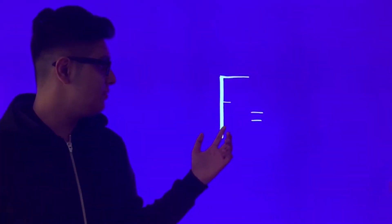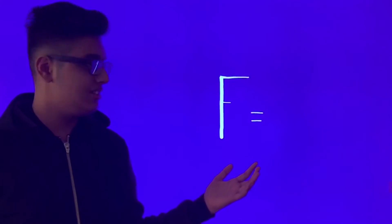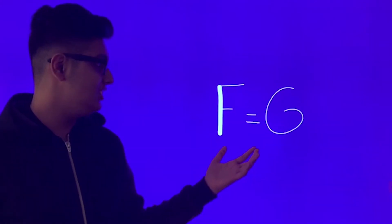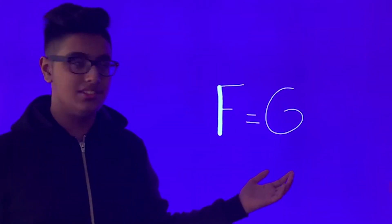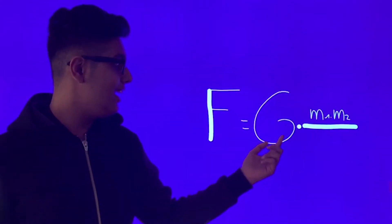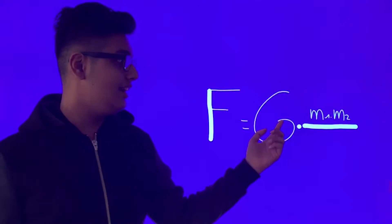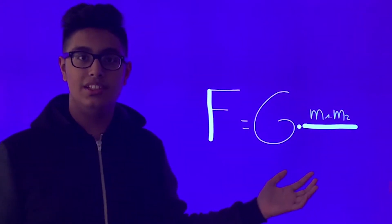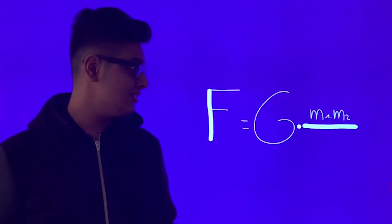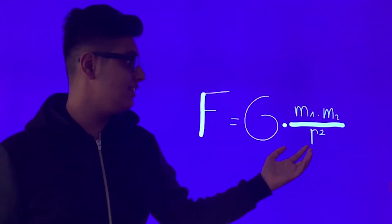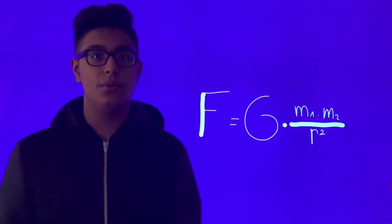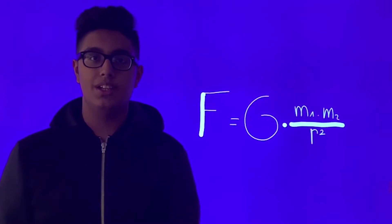The equation is the following: F, that is the force; G, that is the gravitational constant; M1 and M2, that are the two masses; and R squared is the distance from the center of the two masses.